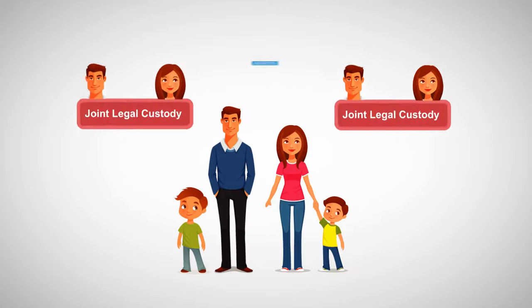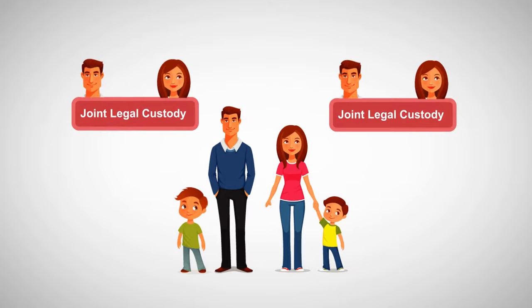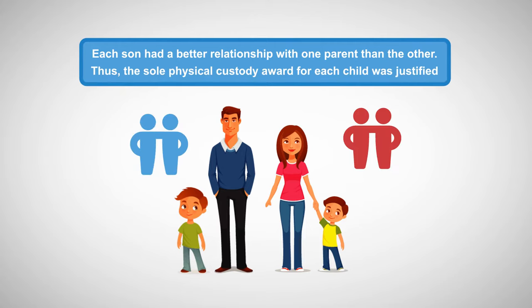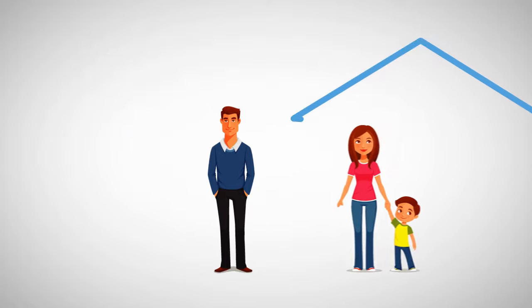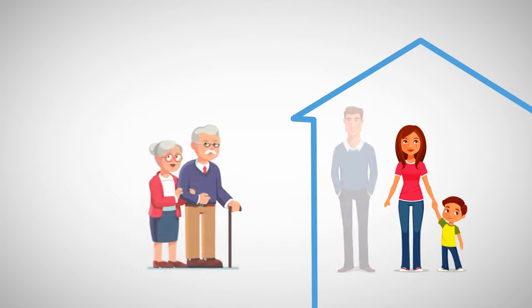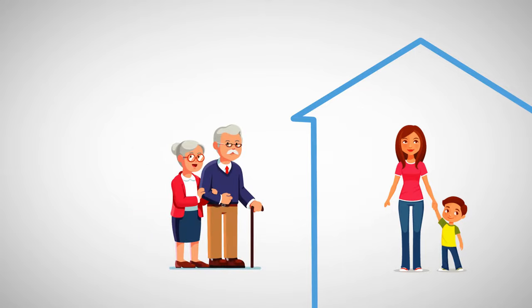In one New York case, both the mother and father of their two sons had joint legal custody of both children. However, the court awarded sole physical custody of each child to a different parent, so that one son lived with his mother and the other son lived with his father. On appeal, the appeals court approved this arrangement, noting that the best interests of different children might be attained by giving physical custody to separate parents. Each son had a better relationship with one parent than the other, thus the sole physical custody award for each child was justified. Parents not granted custody are usually granted visitation with the child, and visitation rights may also vest in non-parent relatives.